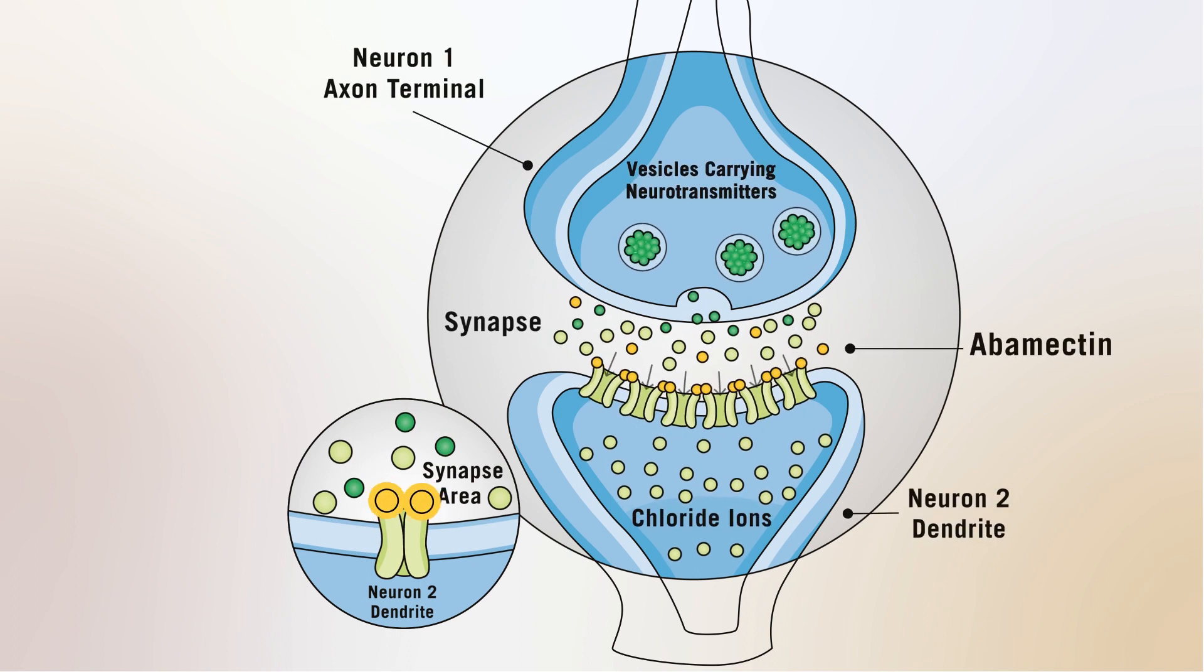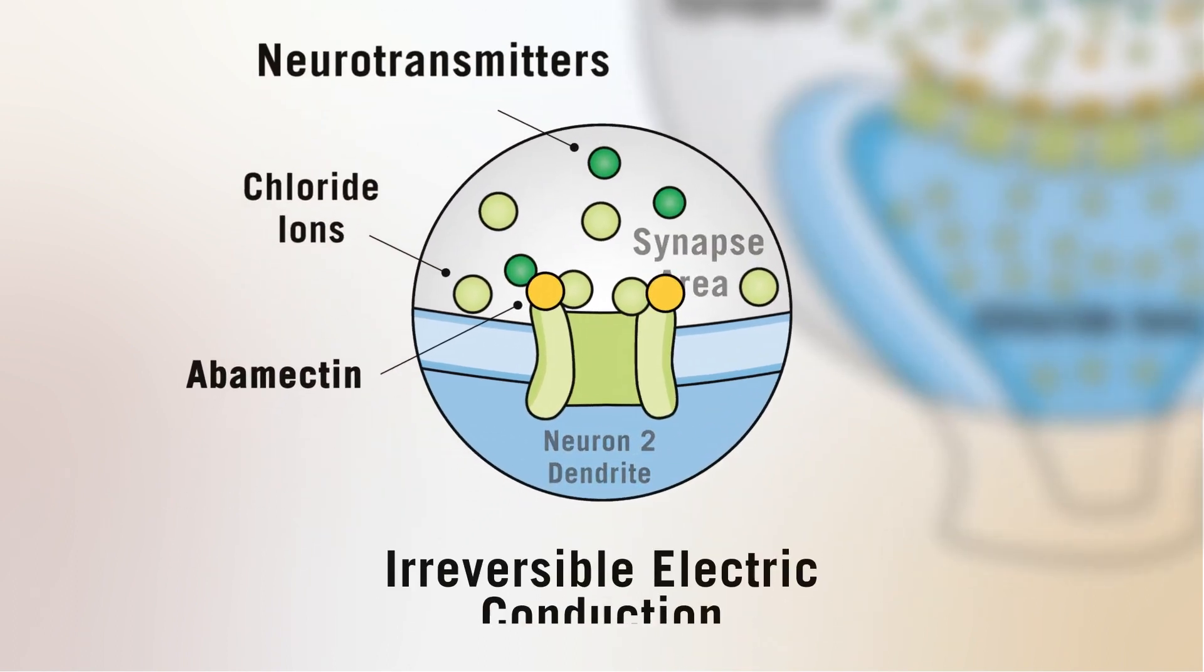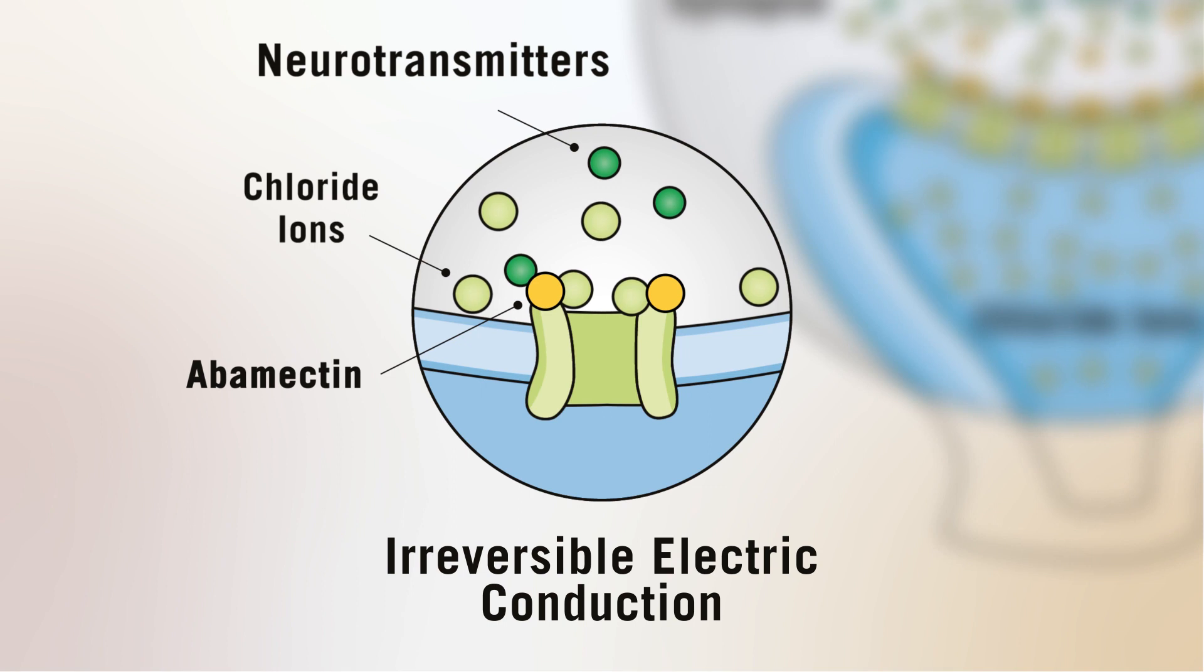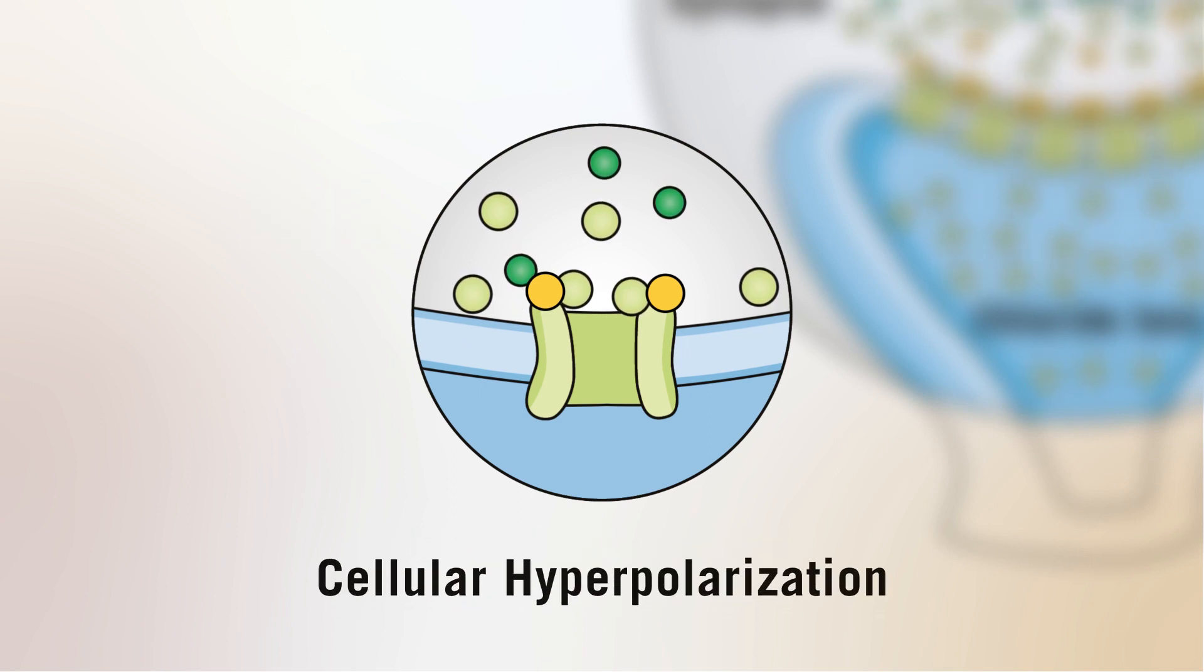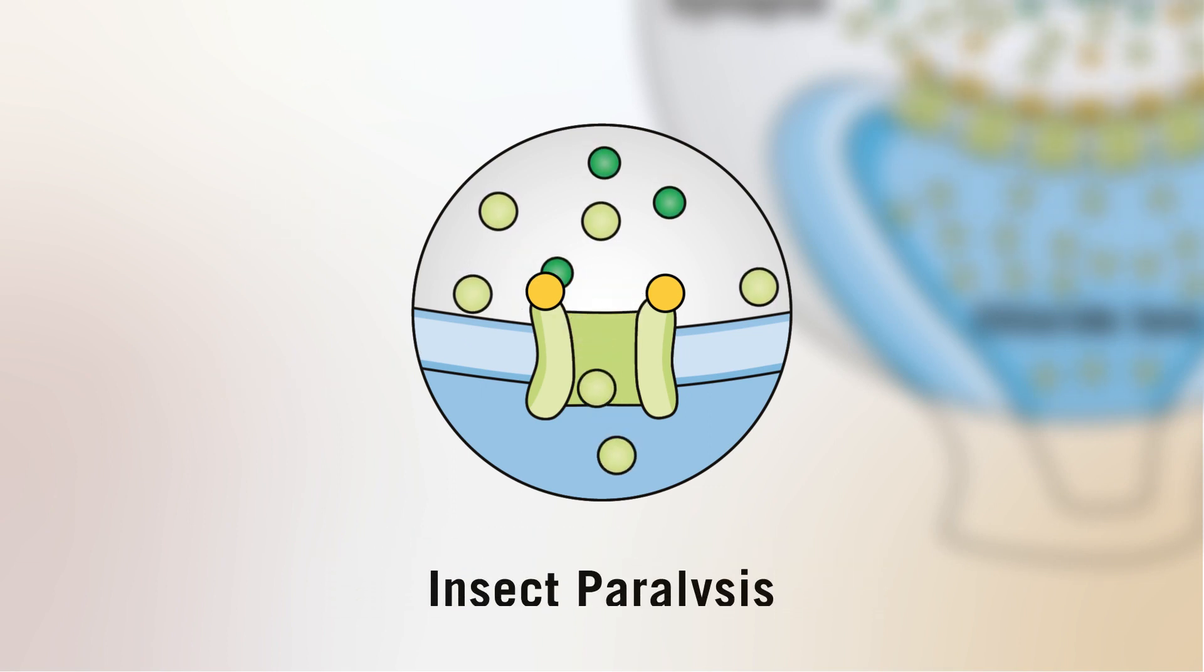Abamectin binds with the glutamate-gated chloride channels causing irreversible electric conduction, cellular hyperpolarization, and paralysis.